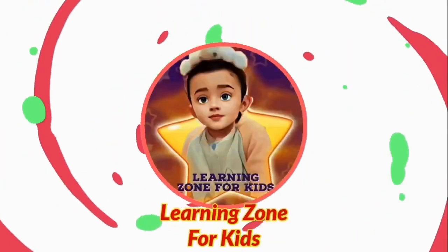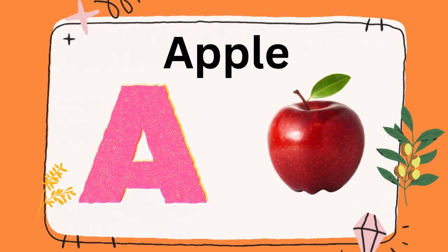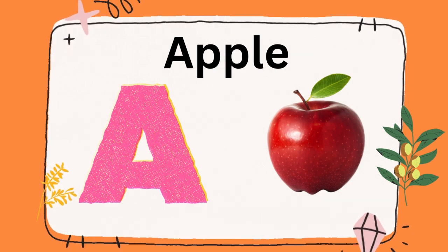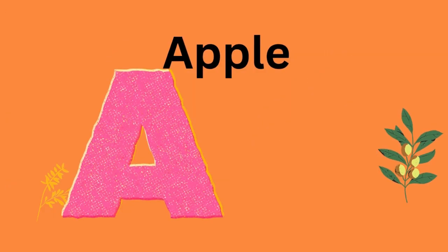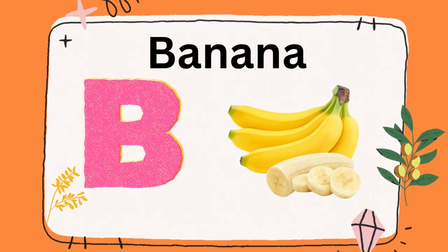Learning zone for kids. A is for apple, apple. B is for banana.